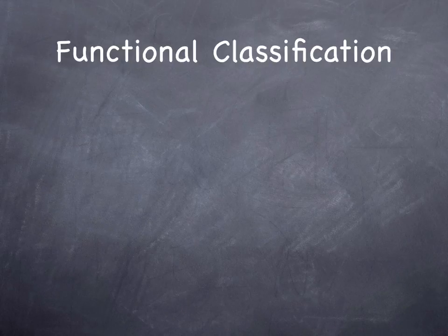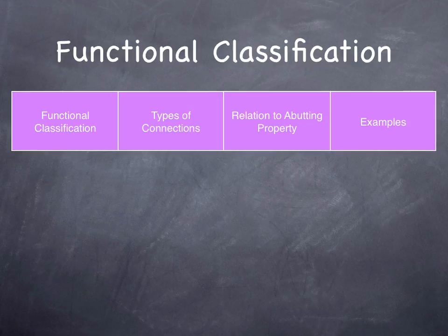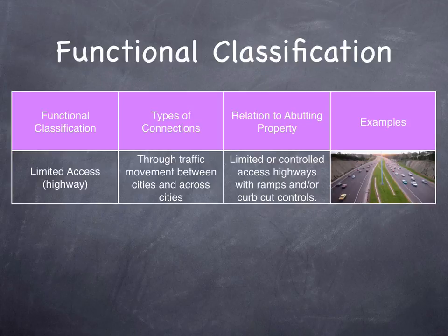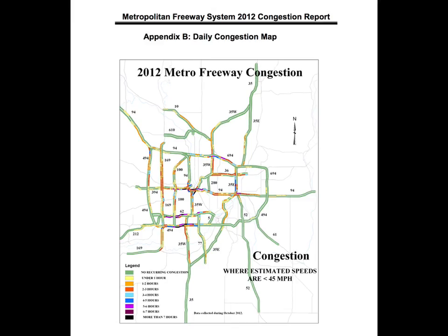We give labels to the different types of roads — what's called a functional classification. This includes limited access highways, which serve through movements between cities and across cities. We can see a map of the limited access system in the Twin Cities region, where the colors indicate the level of congestion on each of these routes.